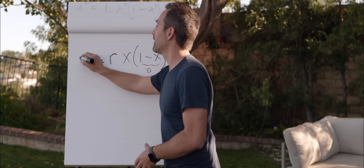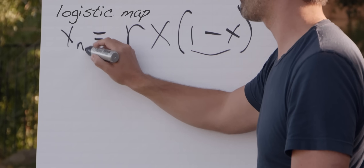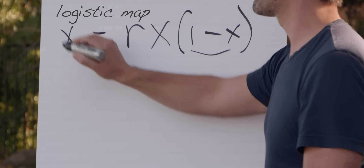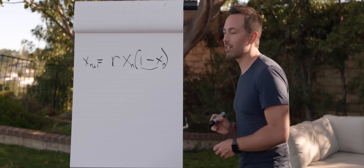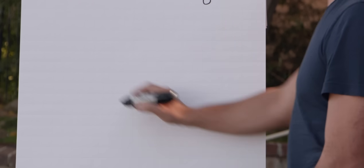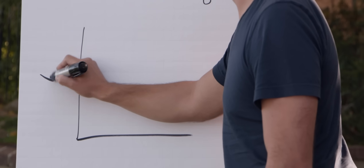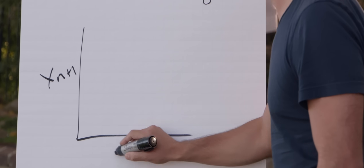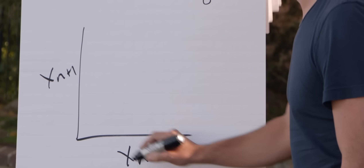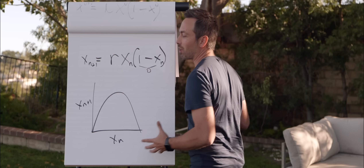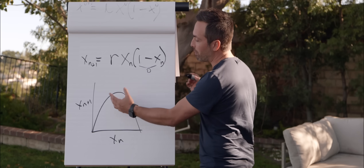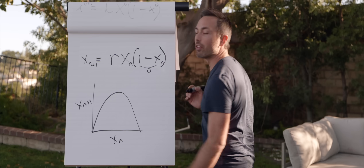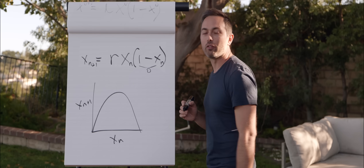This is the logistic map. X n+1 is the population next year, and X n is the population this year. If you graph next year's population versus this year's, you see it is just an inverted parabola — the simplest equation you can make that has a negative feedback loop. The bigger the population gets, the smaller it'll be the following year.